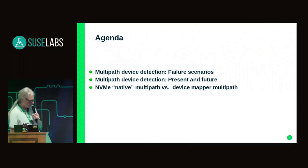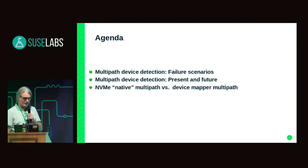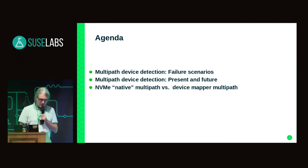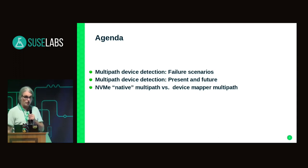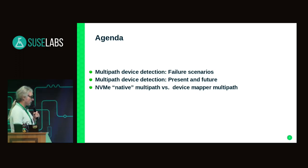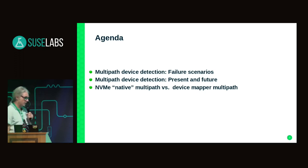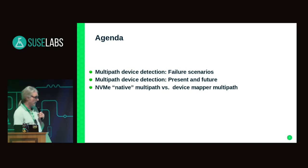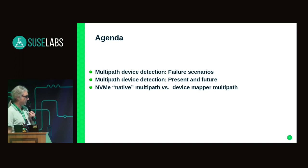It does have its share of bug reports and there are certain reasons for that, and I'm going to talk about that. The agenda is: first I will talk about some typical failure scenarios, then I'm going to talk about what we can improve. And finally, if there's still time, I will have a few slides about NVMe native multipath versus legacy device mapper multipath.